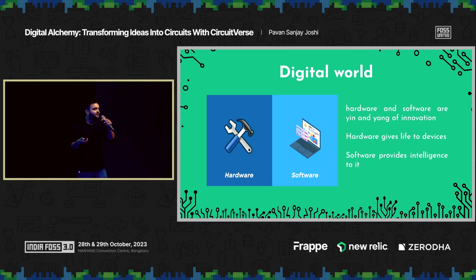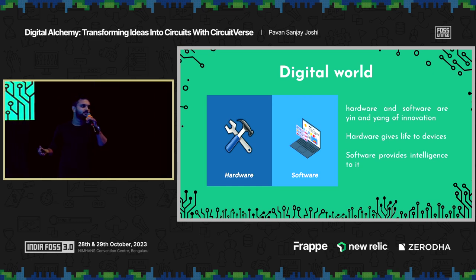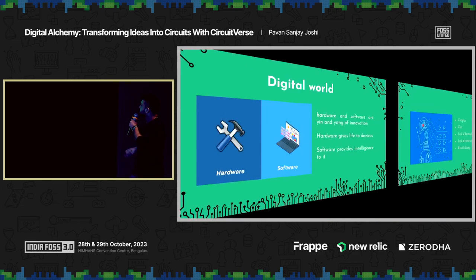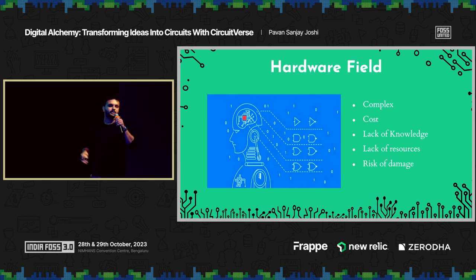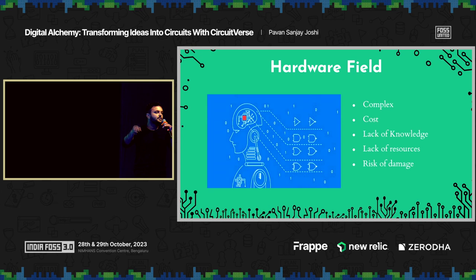All kinds of computers, all kinds of devices — devices you carry in your pockets, the camera recording my session, the display behind me — all are based on circuitry which needs to be designed. Digital logic design is a very fundamental topic in computer science and electronics education. Designing such complex systems is often a daunting task. You might have to set up your own physical hardware lab, buy equipment that requires cost. As a beginner, you are always underconfident, there is a lack of knowledge, lack of resources, and hardware components are often delicate and risk damage.